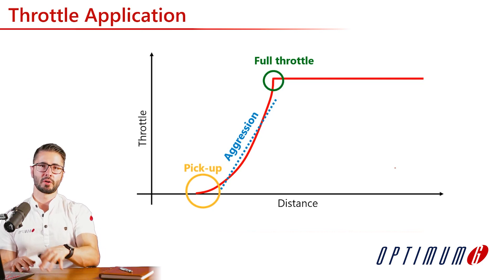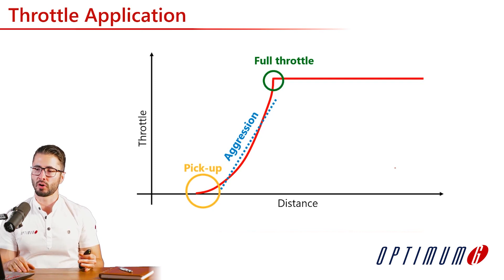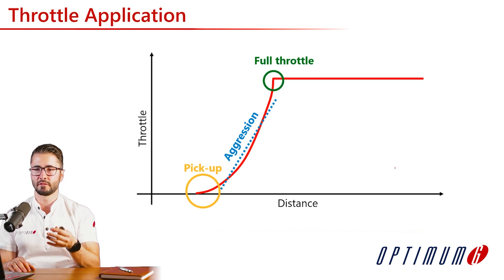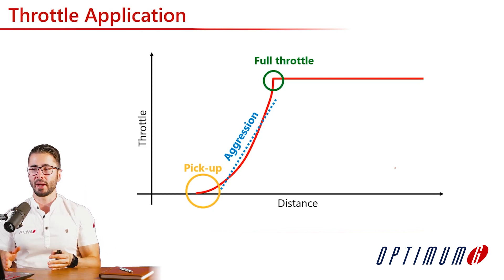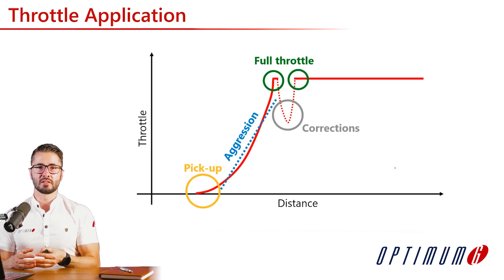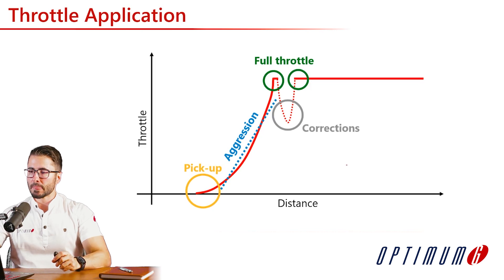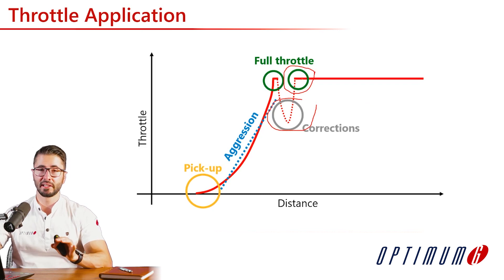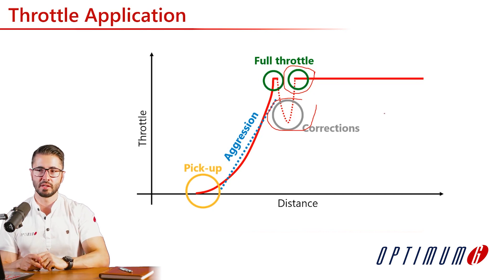If the driver is too aggressive — picking up the throttle too early or going to full throttle too early — they may need to make corrections: lifting the throttle and going back on. Not only do you see these corrections, but it delays the real full throttle application point. The driver is typically going to lose a lot of speed if doing these types of corrections, as we'll see in the examples.